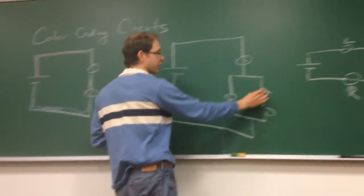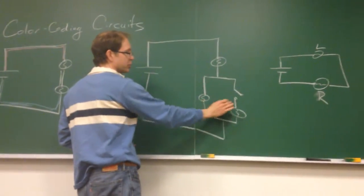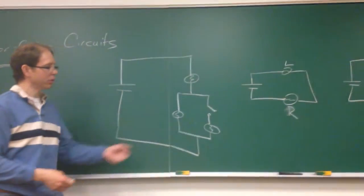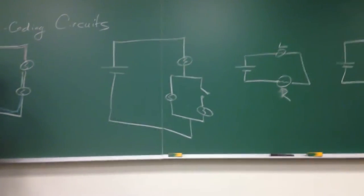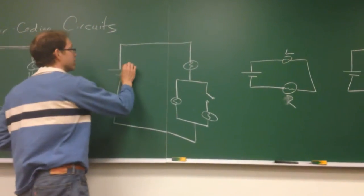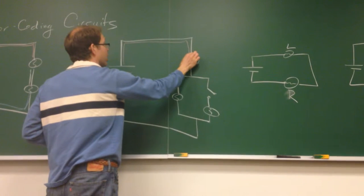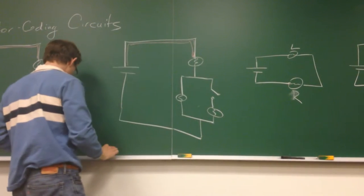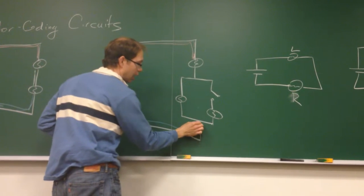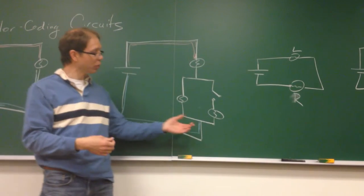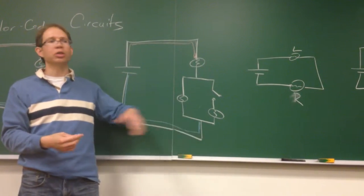Where it becomes powerful is when you start to have a change to a circuit. Here's our same circuit—two bulbs in series—but getting ready to put a second bulb in parallel with one of the bulbs. Let's color code it first the way it is, and we'll get the same setup as we had here.